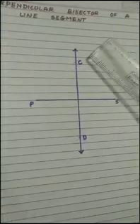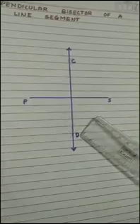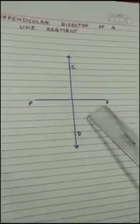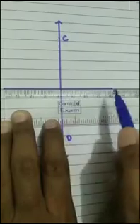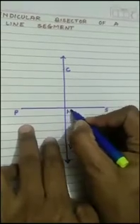Here you can all see that line CD is the perpendicular bisector of line segment PS. We have taken PS as 8 cm, and line CD is dividing the line exactly into two equal halves, that is 4 cm each. Name the center point as point M.